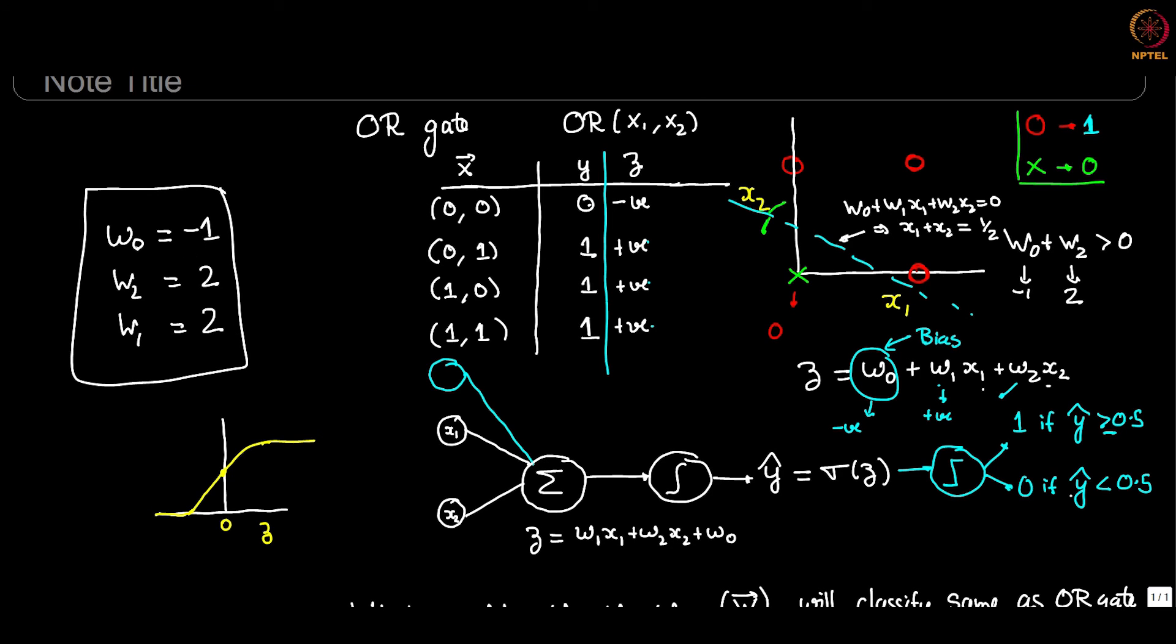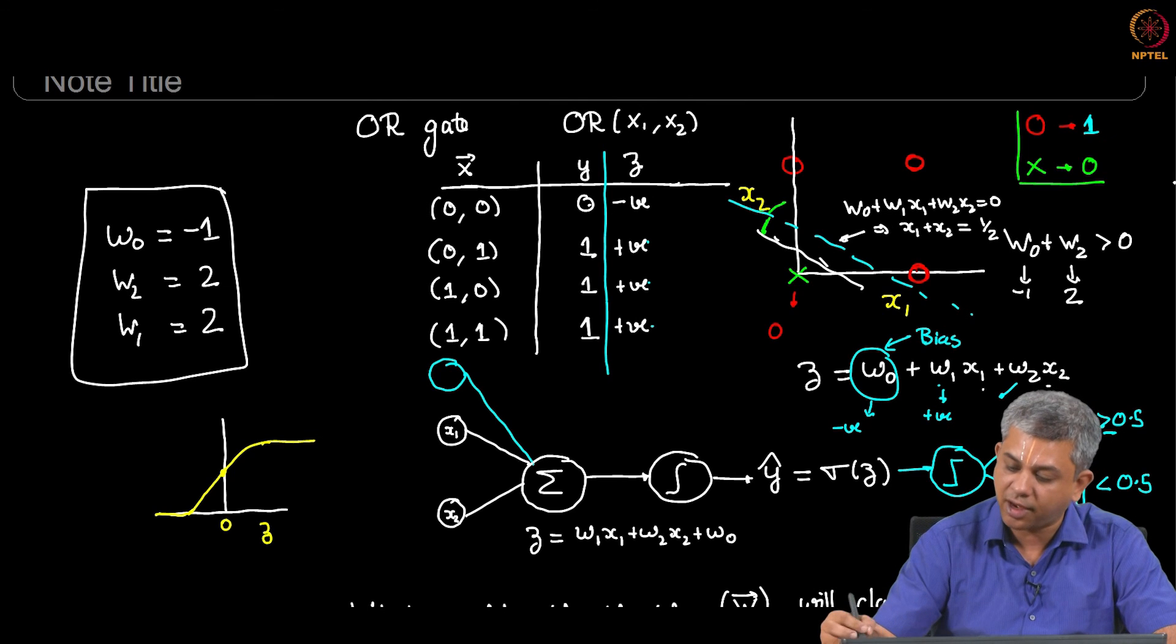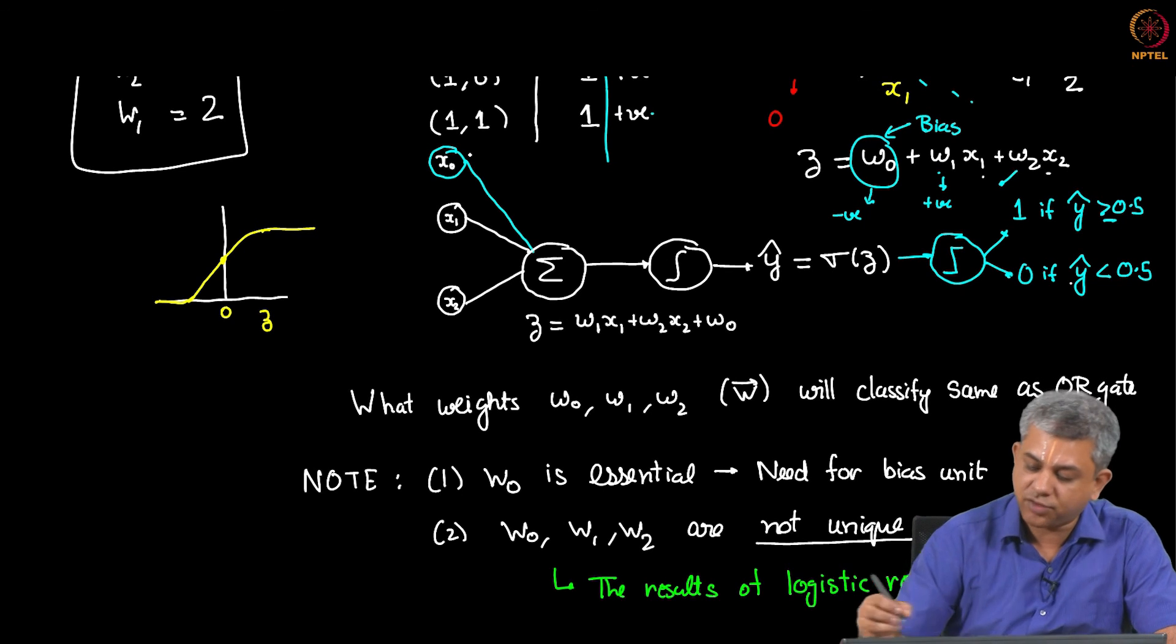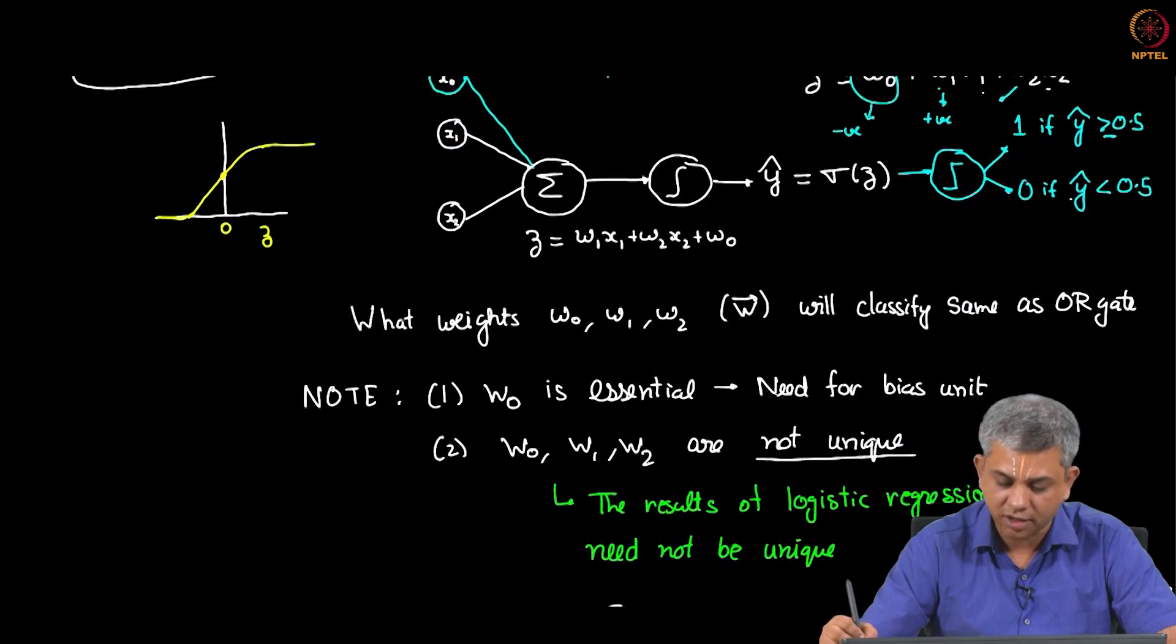You could also give the value for example W0 equal to minus 1, W2 equals 3, W1 equals 3, in which case the classification line would be inclined at a slightly different angle. So it would be still parallel to this but it will be slightly here, so that would be the line X1 plus X2 equal to 1 by 3. So this tells you how logistic regression can be replicated or the OR gate can be replicated using logistic regression. In the next video we will see how the other gates can also be replicated using logistic regression.